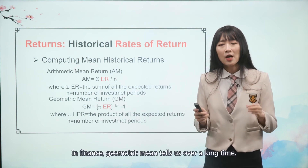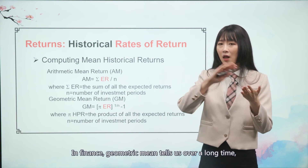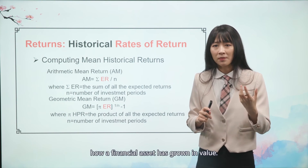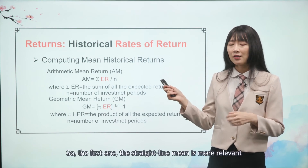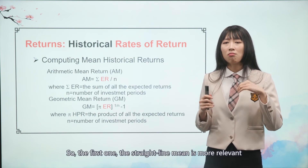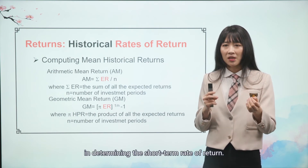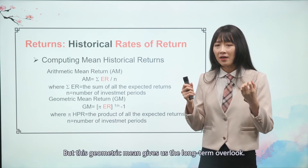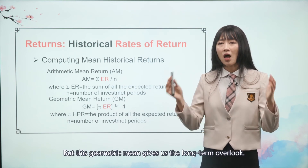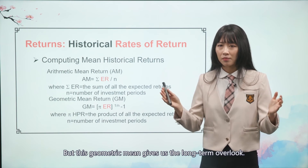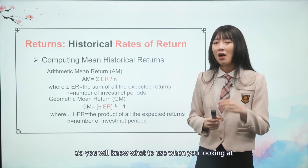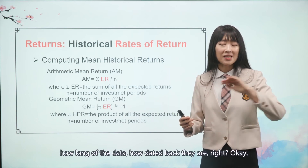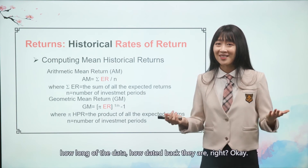In finance, the geometric mean tells us how a financial asset has grown in value over a long time. The arithmetic mean is more relevant in determining the short-term rate of return, while the geometric mean gives us the long-term outlook. So you'll know what to use depending on how long the data period is and how far back it dates.